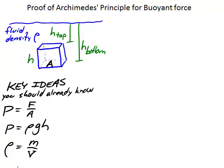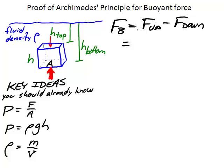Key to this idea is hydrostatic equilibrium — that the pressure is greater the deeper you go down in the fluid. The fluid pressure is pressing in on all sides of this box, but the key idea is that the pressure pressing in on the bottom of the box is stronger than the pressure pushing down on the top of the box. The buoyant force is the difference between the force pushing up and the force pressing down.